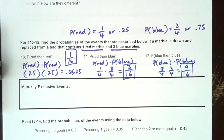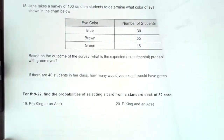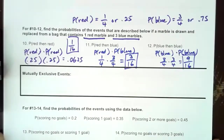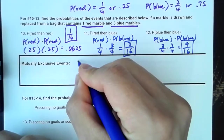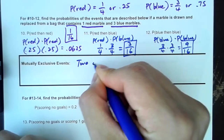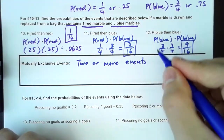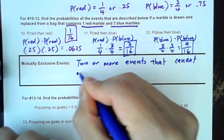That was basically how to calculate compound events. There are more opportunities to practice, but that's the bulk of the lesson. Now I want to talk briefly about what we call a mutually exclusive event — two or more events that cannot occur at the same time.